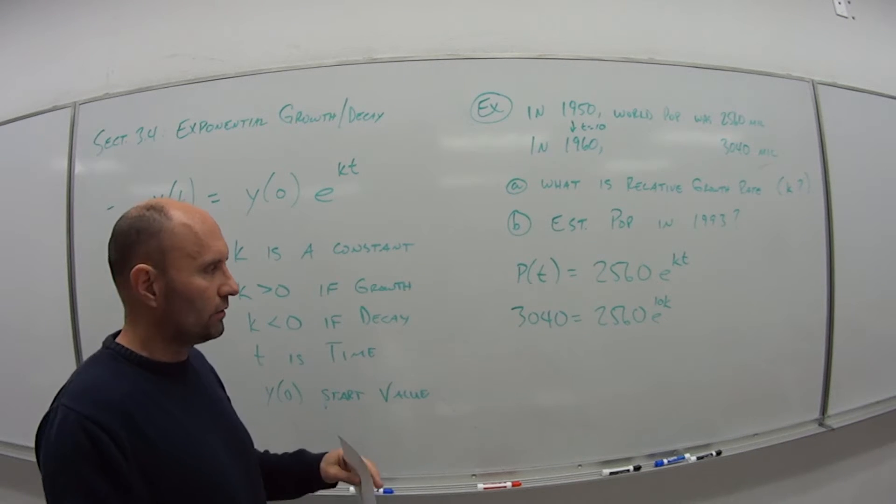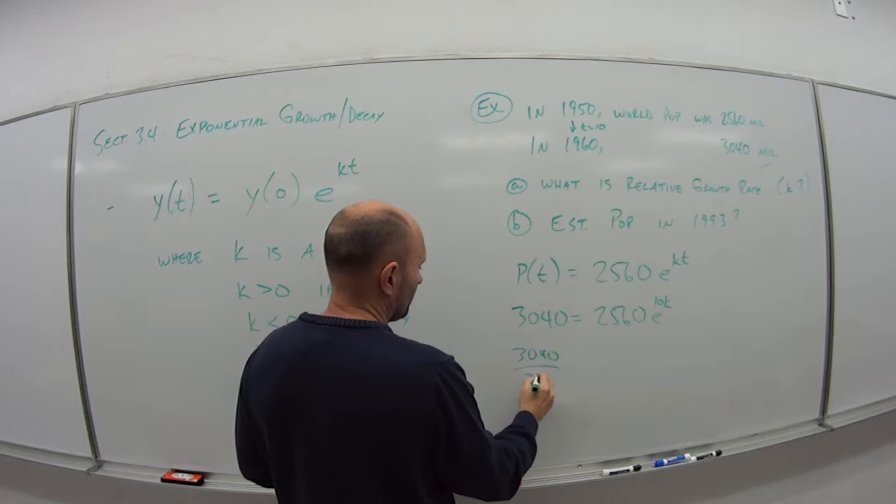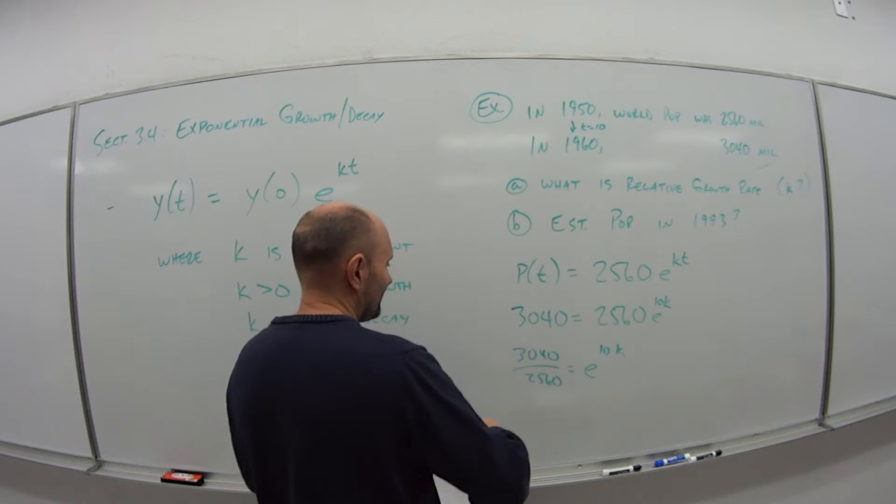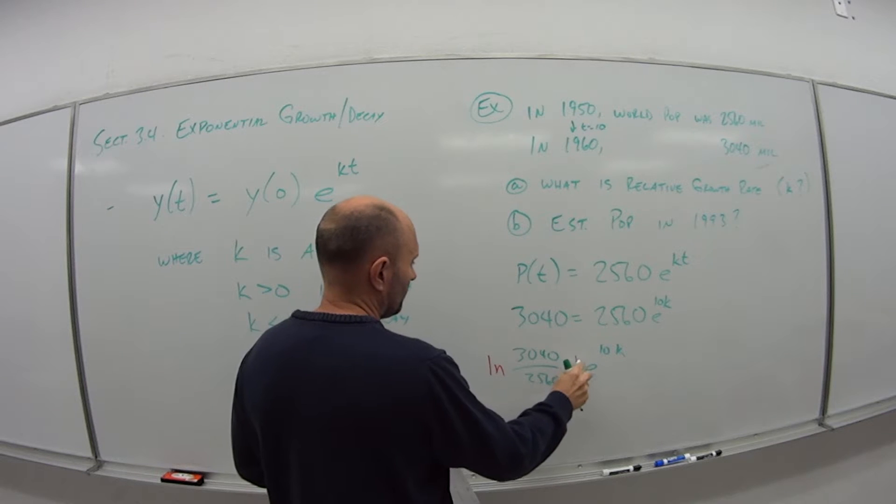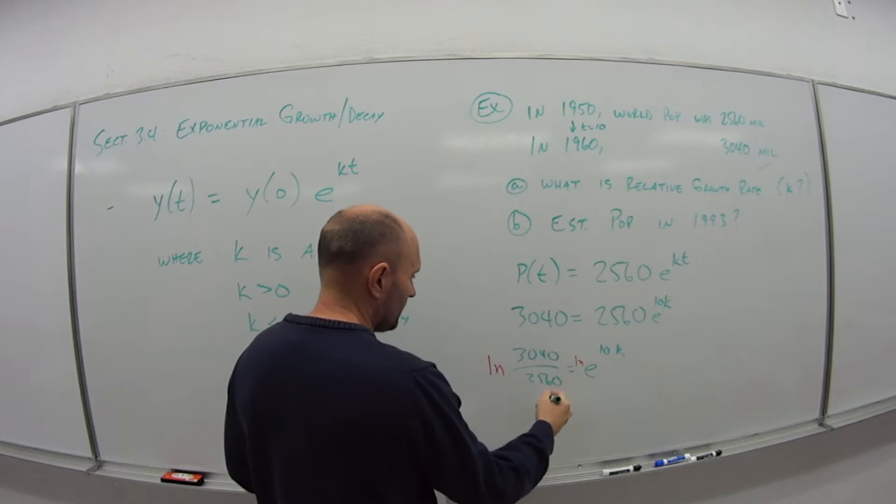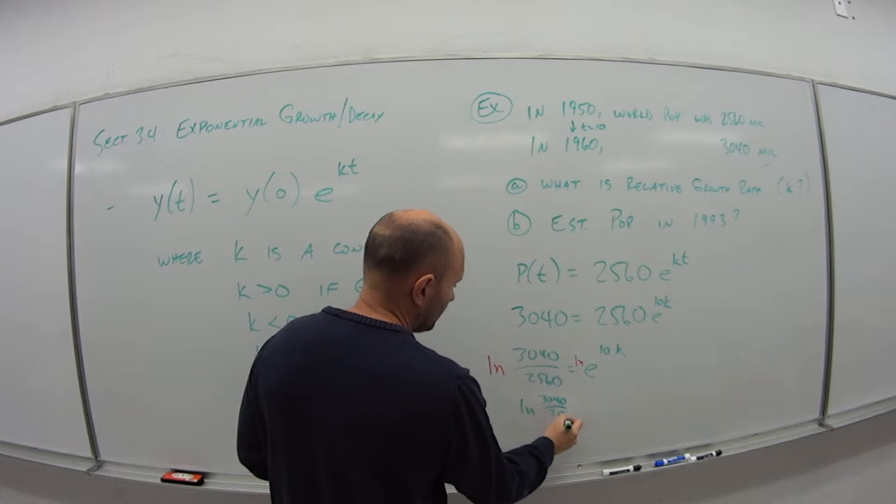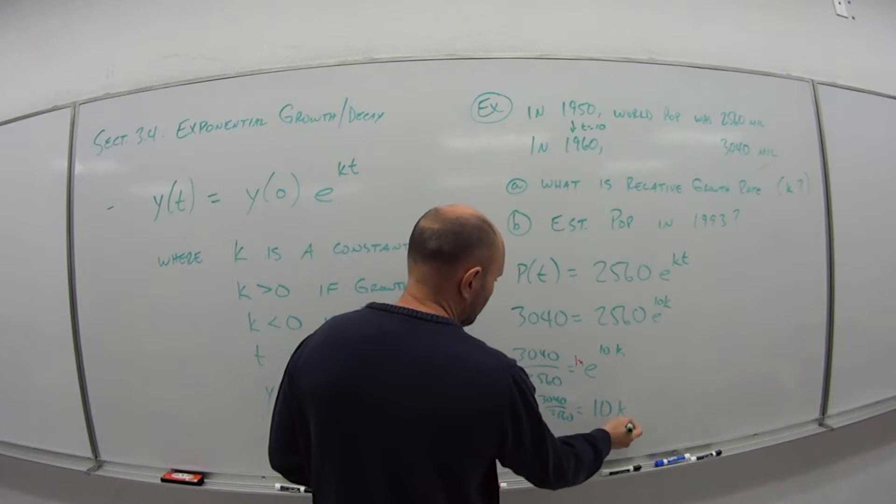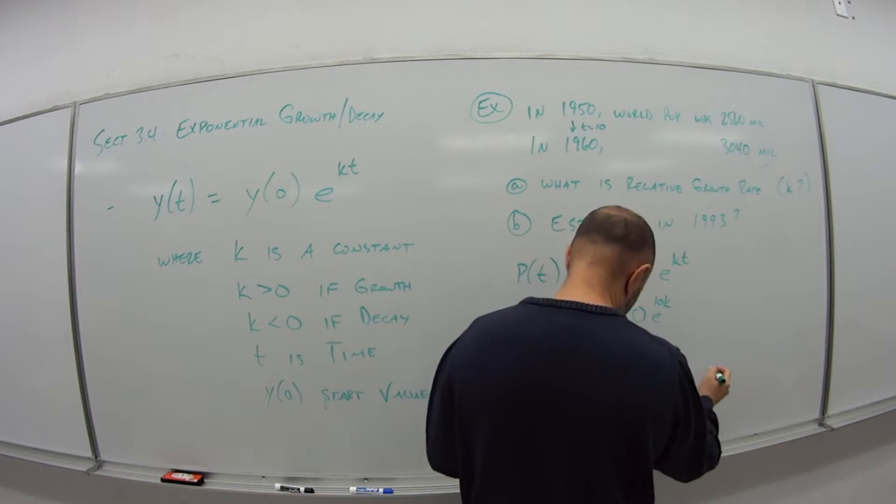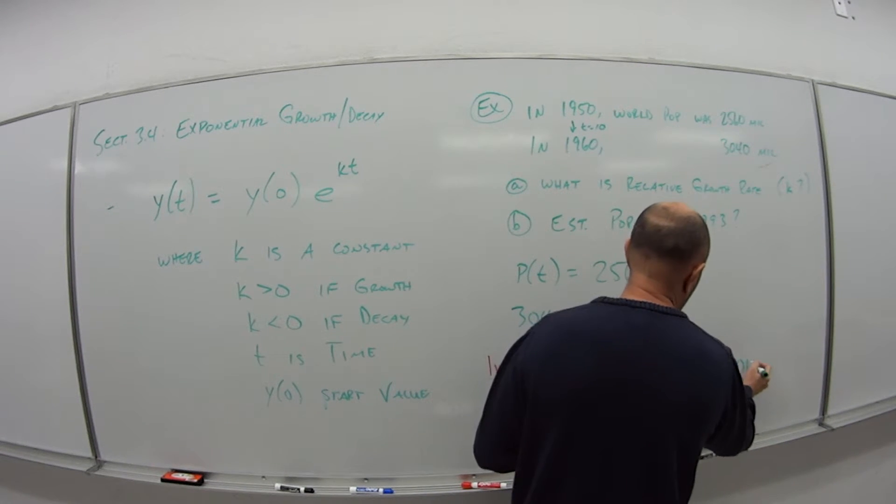Now it's taking some logs, doing some algebra. So first thing, if I divide both sides by the 2560, that gives me e to the 10k. So if I take the natural log of both sides, natural log of e, what happens? Well, they basically cancel each other out. So I get natural log of 3040 over 2560 is equal to 10k. So divide both sides by 10.